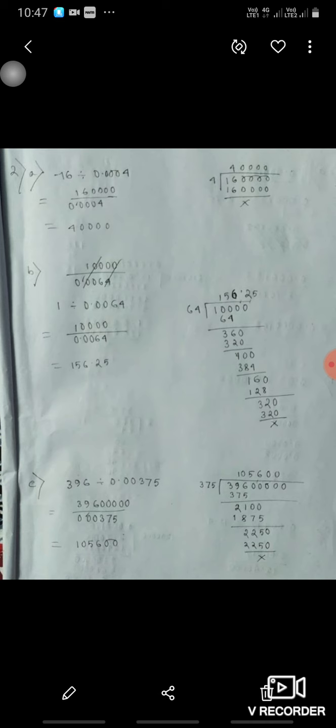So it means after decimal 4 numbers are there, so it will become 10,000 upon 64, that will be 156.25. Then c part, 396 divided by 0.00375 means 396 and 0, there will be 5 zeros, divided by 375 which is equal to 105,600.